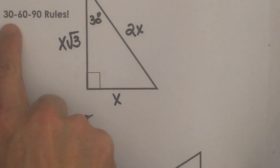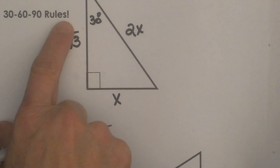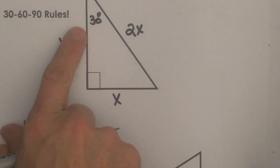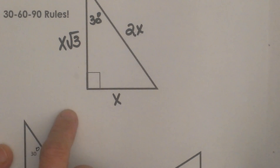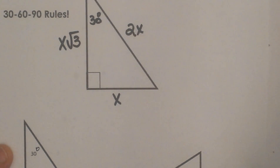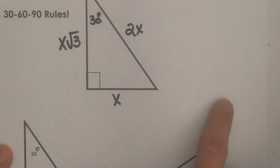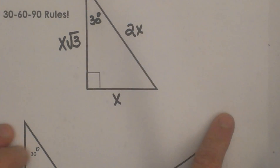Welcome to Moo Moo Math. Today we are going to look at the rules for 30-60-90 right triangles. These are shortcuts and they are also SAT tips for the special right triangle rules of 30-60-90.